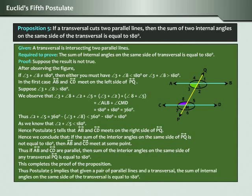Postulate 5 implies that given a pair of parallel lines and a transversal, the sum of internal angles on the same side of the transversal is equal to 180 degrees.